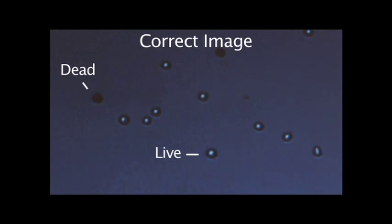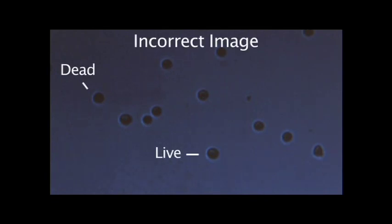Live cells have bright centers and dark edges. This image is incorrectly adjusted. Live cells do not have distinct bright centers.